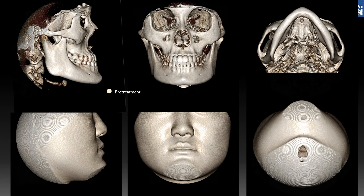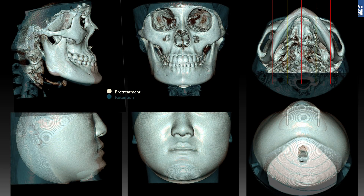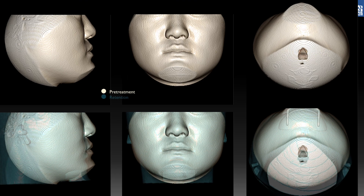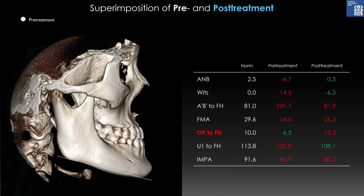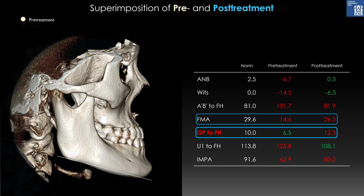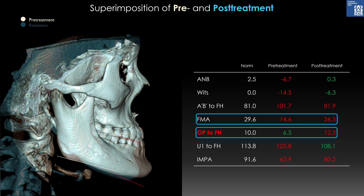Gray shows pretreatment and blue shows retention. Rotational setback of the mandible was achieved, correcting the asymmetry. In soft tissue comparisons, the square mandible became rounded by rotational setback. By maxillary molar intrusion and incisor extrusion, the occlusal plane was rotated 6 degrees backward. Mandibular plane angle increased by 12 degrees through this rotation and also by angle-shaving and remodeling. The effect of mandibular rotational setback combined with orthodontic rotation of the maxillary occlusal plane can be called a double jaw surgery-like effect.